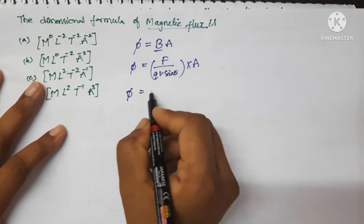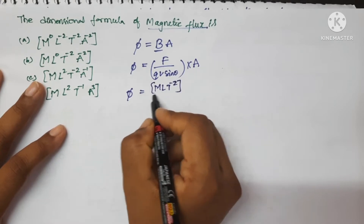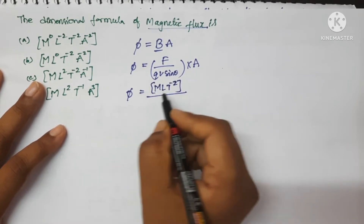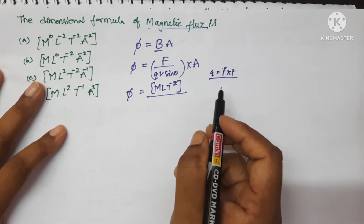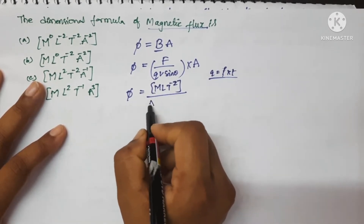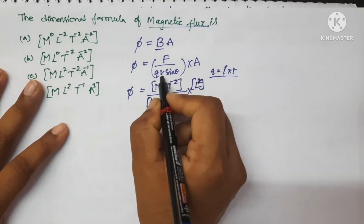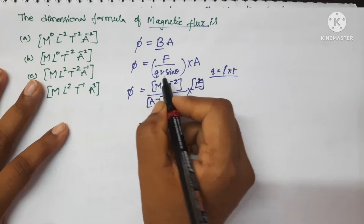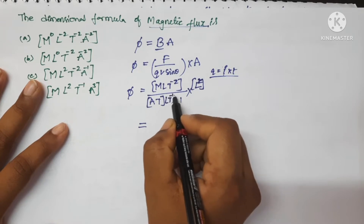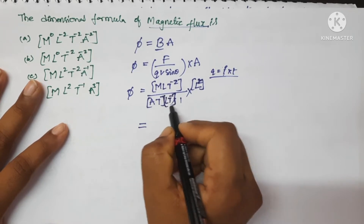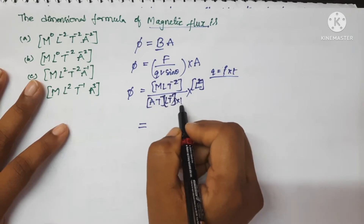Now write the dimensional formula for force: MLT⁻² — upon q. The formula for q is equal to i multiplied by time, that is current multiplied by time. So for current it is A (ampere) and for time it is T. This is the dimensional formula for qv. For velocity: LT⁻¹. And sinθ is a dimensionless quantity.